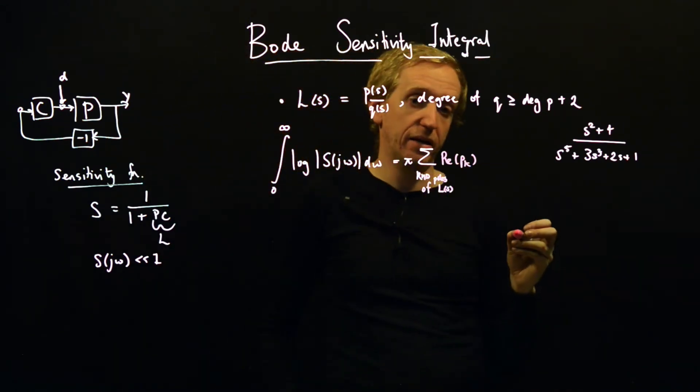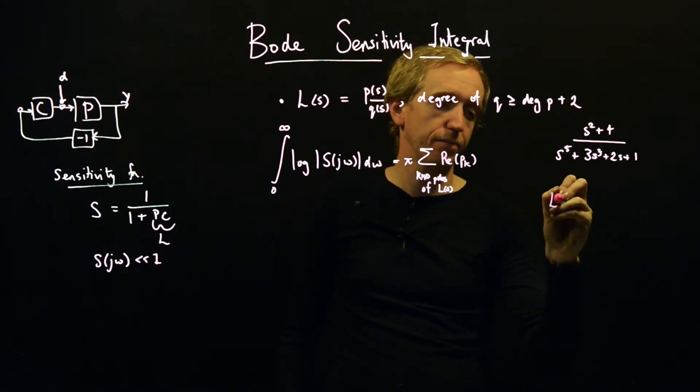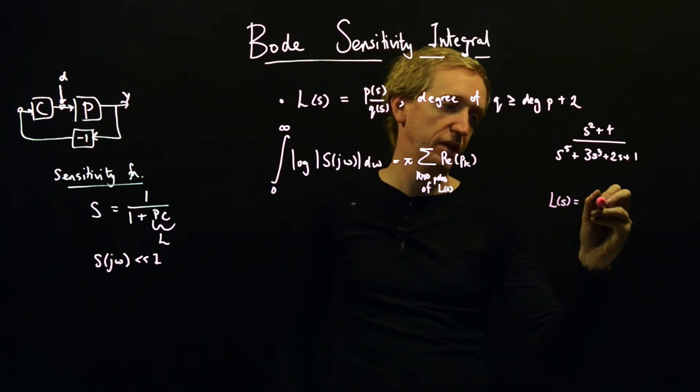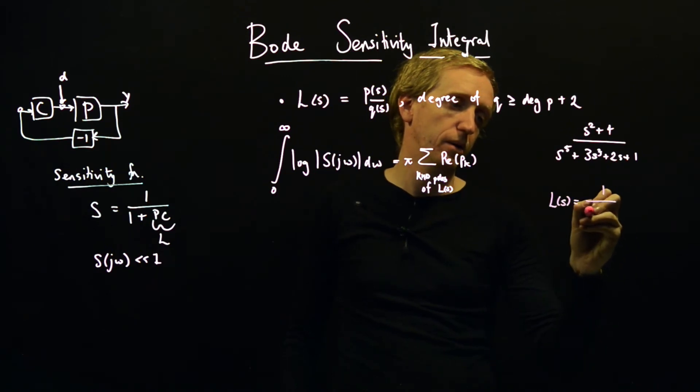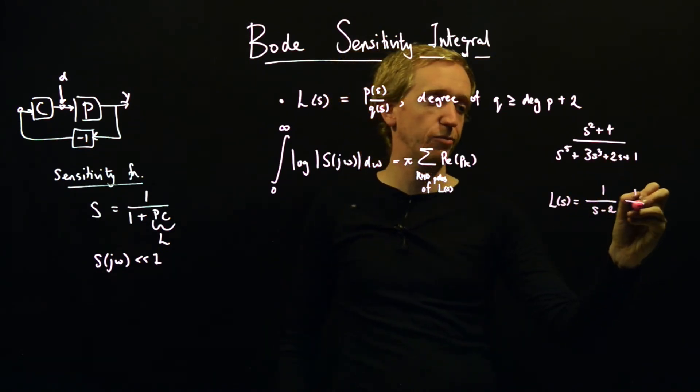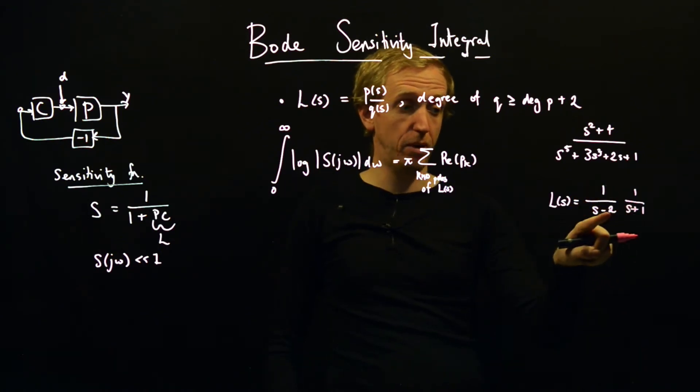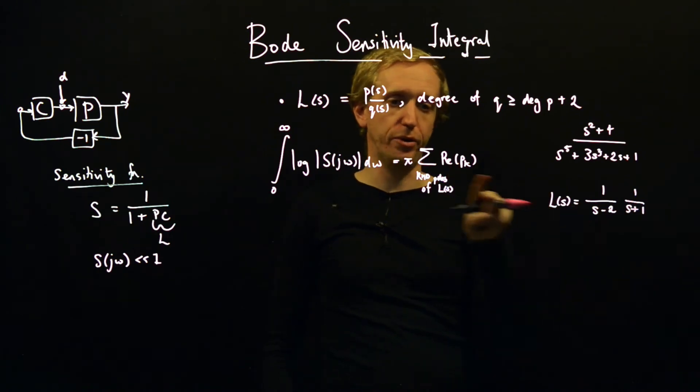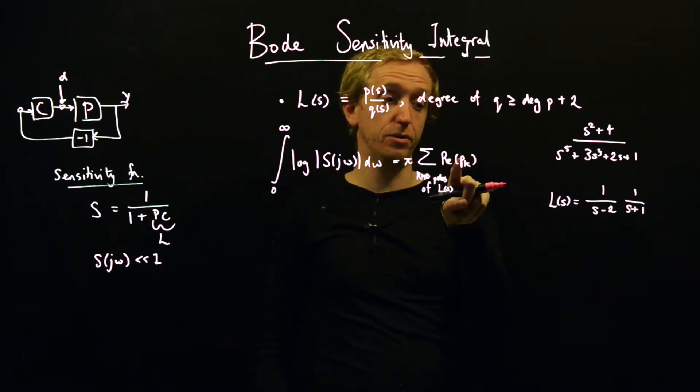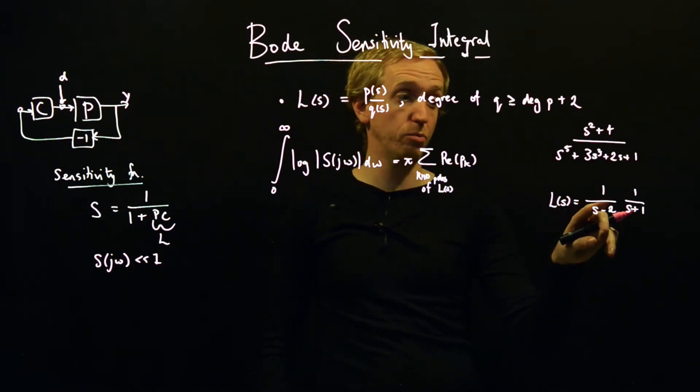So to give you an example, let's say that L of s was equal to 1 over (s minus 2), and then just say over (s plus 1). Well, L of s has got one right half plane pole - it's at the value s is equal to 2. It's not a complex number, so the real part of 2 is just 2. And so the Bode sensitivity integral would be saying that if L of s has got this form, then the sensitivity integral would be equal to π multiplied by 2.